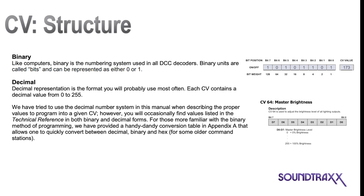CV values are commonly represented in two numeric formats: binary or decimal. Like computers, binary is the numbering system used in all DCC decoders. Binary units are called bits, and each can be represented as either a zero or a one. Decimal representation is the format you will probably use most often. Each CV contains a decimal value from 0 to 255. We have tried to use the decimal number system in this manual when describing the proper values to program a given CV. However, sometimes you will find values listed in the technical reference in both the binary and the decimal forms.